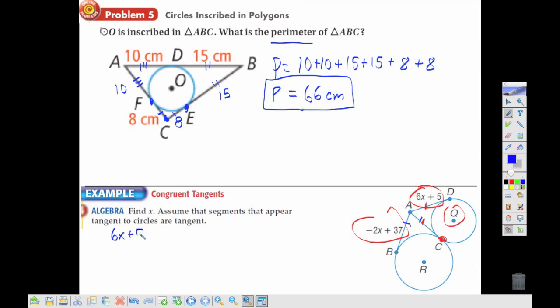And so I can take this 6x plus 5, and set it equal to negative 2x plus 37, remove the 2x, get 8x, I can subtract 5 to get 32, giving me x is equal to 4.